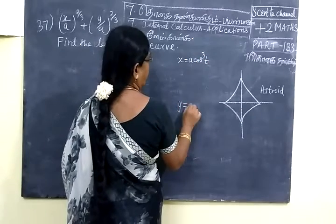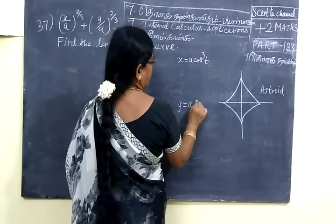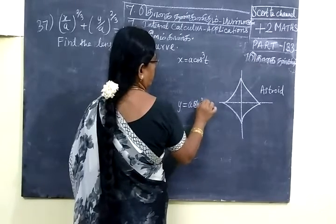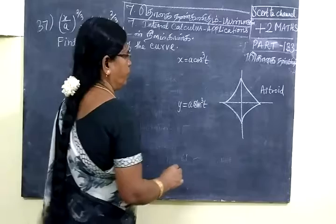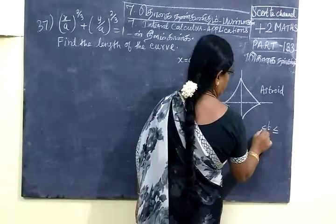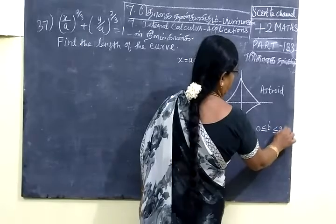Then y is equal to a sin³ t. This is parametric form where t lies between 0 to 2π.